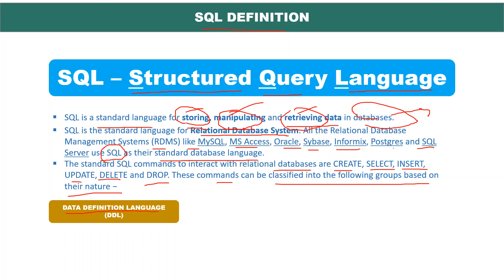First is Data Definition Language — DDL. Here you can use 'create': whenever you want to create a database or new table, you write 'create table table_name.' There is also 'alter' — if you want to change something inside a table or database, you use the alter command. And then 'drop' — if you don't need a particular table, it is taking space and is of no use, you use drop to delete it from the database entirely.